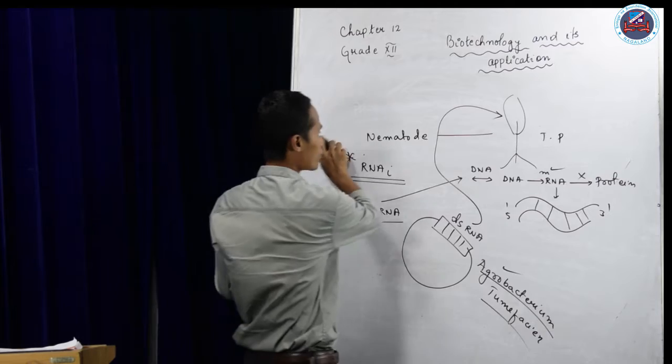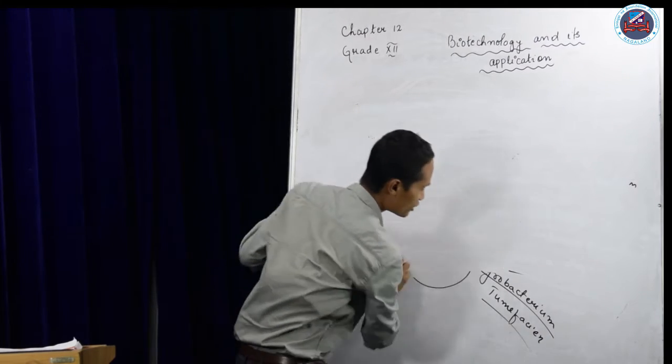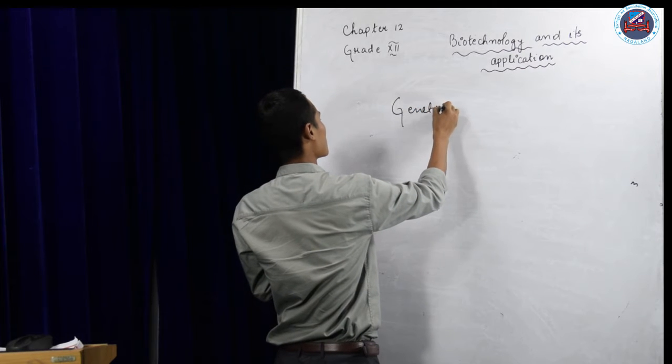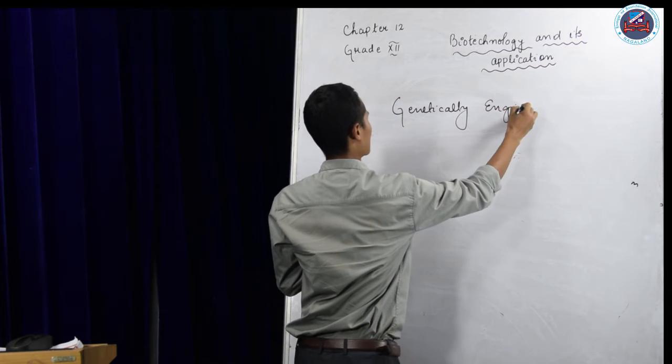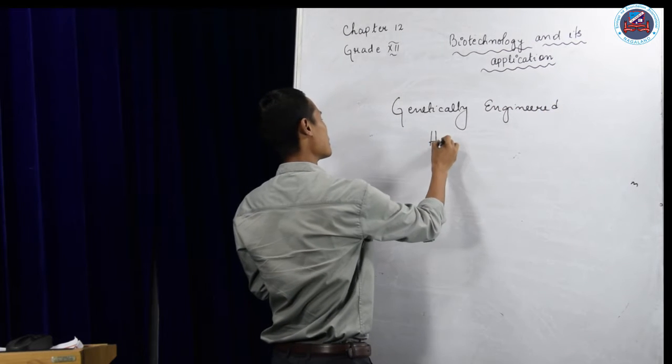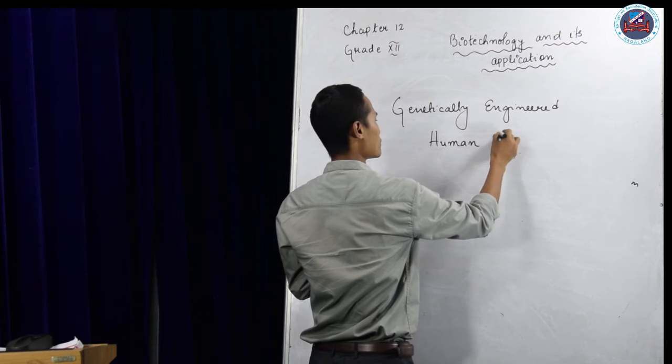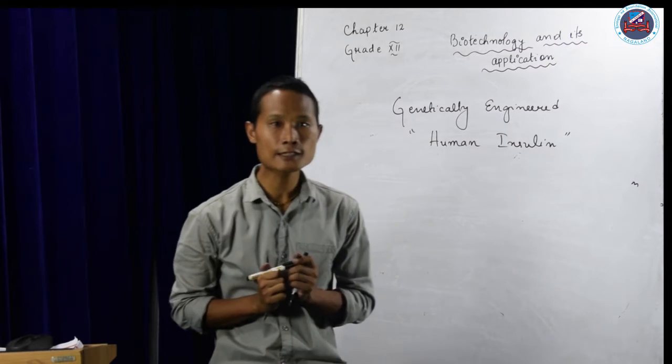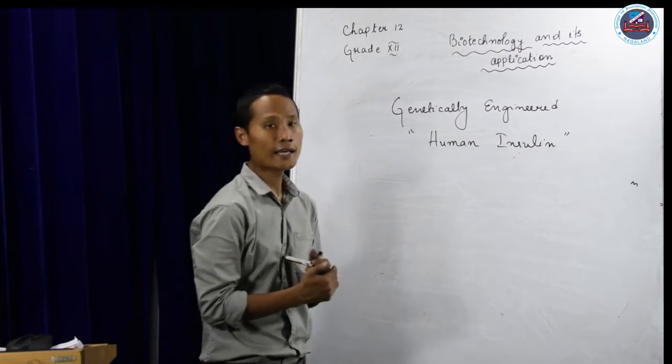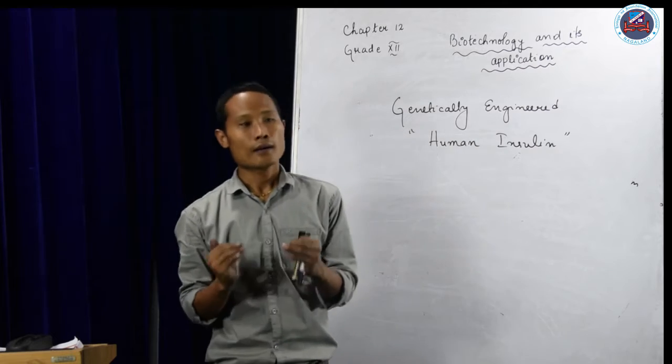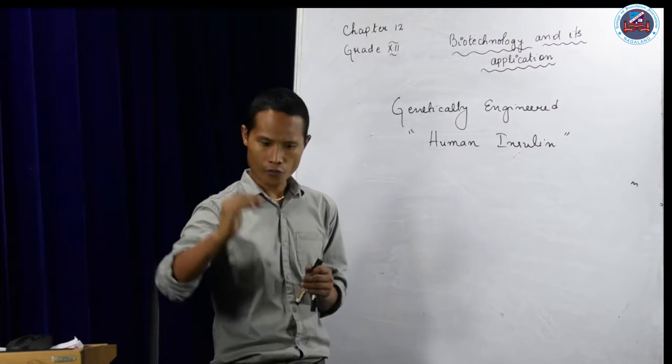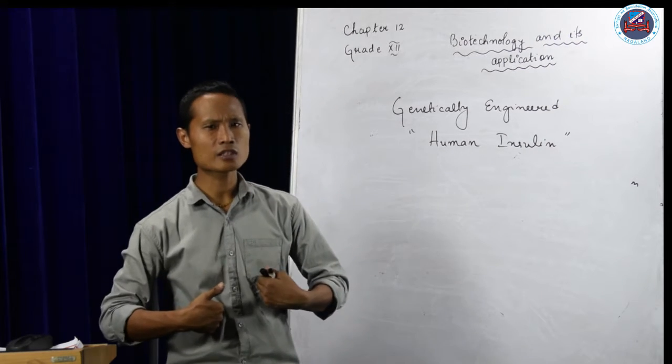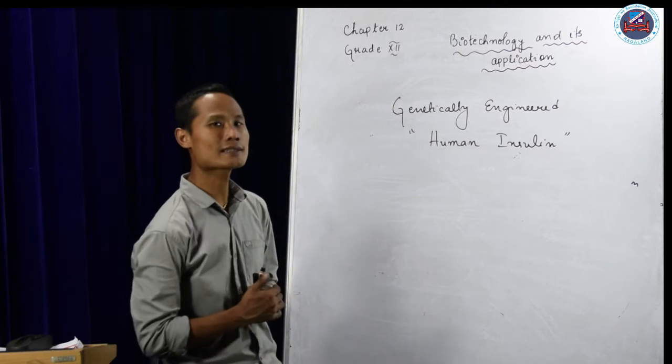Now we are going to discuss another topic called genetically engineered human insulin. I hope you know what insulin is. Insulin is a hormone synthesized by the pancreas gland. This insulin is a hormone that is essential for the diabetic patient. If enough insulin is not produced in our human body, we get a disease called diabetes.